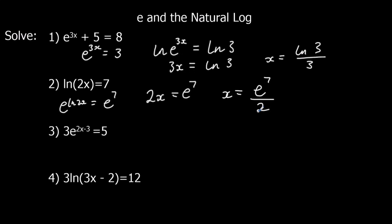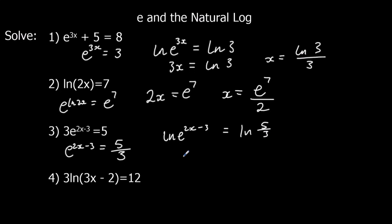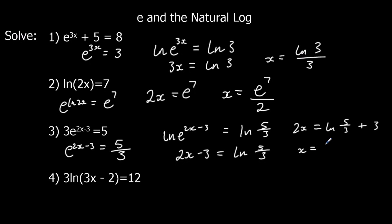Question 3: 3e^(2x - 3) = 5. We divide both sides by 3 first, so e^(2x - 3) = 5/3. Then we apply ln to both sides: ln(e^(2x - 3)) = ln(5/3). ln e cancels, so 2x - 3 = ln(5/3). We add 3 to both sides: 2x = ln(5/3) + 3, then divide by 2: x = (ln(5/3) + 3) / 2.